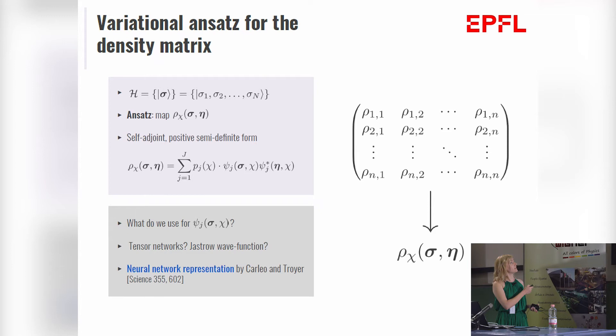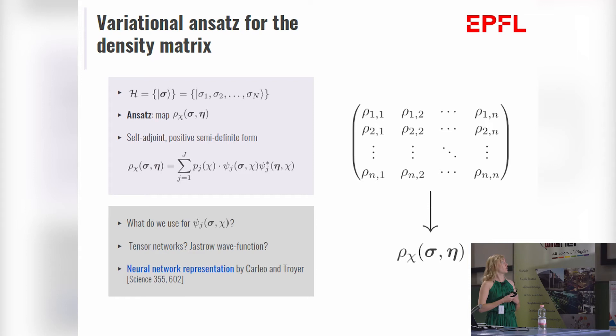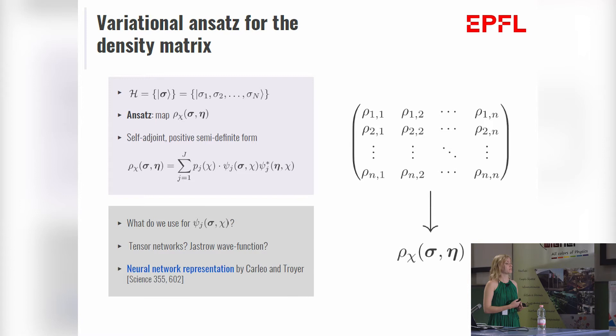Should we resort to the general variational Monte Carlo shapes, like tensor networks or just row wave functions? And the answer is no, because these approaches are sensitive to dimensionality and they are mostly suited for one-dimensional systems. Instead, the idea was, let's use neural networks, which were very successfully applied for closed Hamiltonian systems before.